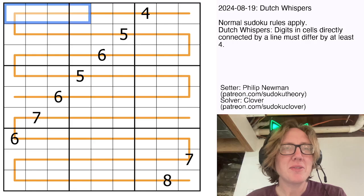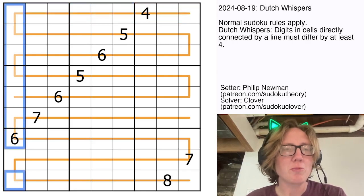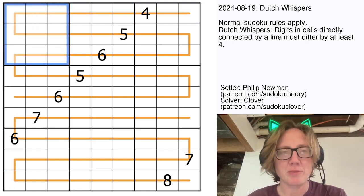So we have standard Sudoku rules, so we're placing the digits 1 through 9, once each, in each row, each column, and each 3x3 outlined region.